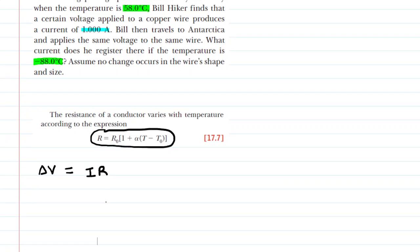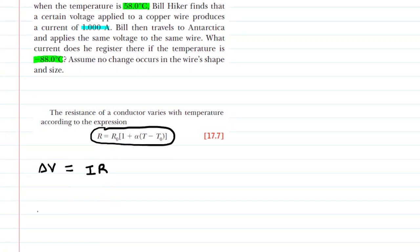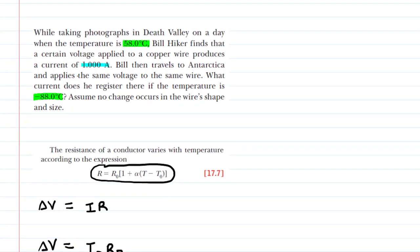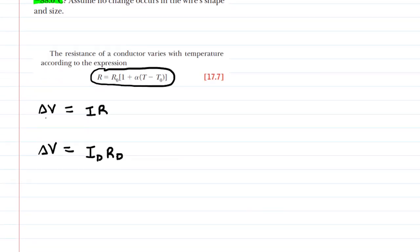We have two different scenarios here. We have the scenario in which the current is flowing through a warm wire in Death Valley. So we might say that current has a subscript D, and the resistance in Death Valley would have a subscript D. We're not going to put a subscript D on the potential difference because the question notes that Bill applies the same voltage to the same wire. So delta V is going to remain constant in this question.